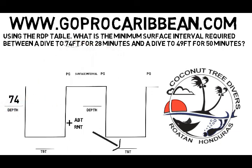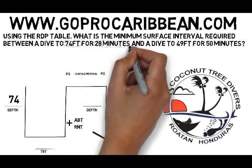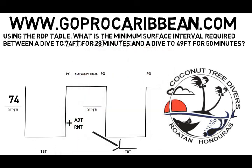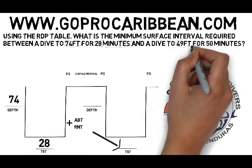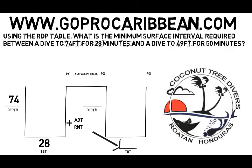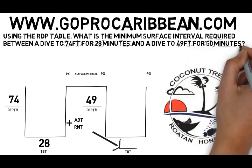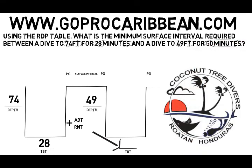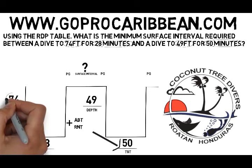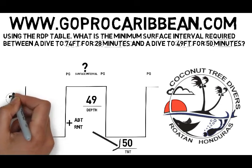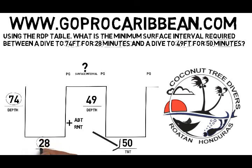The first dive is 74 feet and the time of that dive is 28 minutes, so working from left to right on our diagram we've got our first two blanks filled in. We don't have the surface interval and we also have to calculate pressure groups. The only other information we have is for the second dive: 49 feet for 50 minutes. We can enter that in, and now our diagram has all the information given to us in the question.